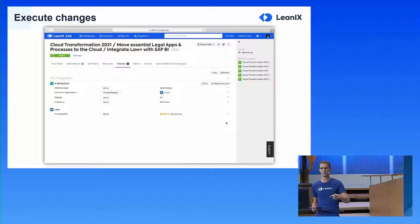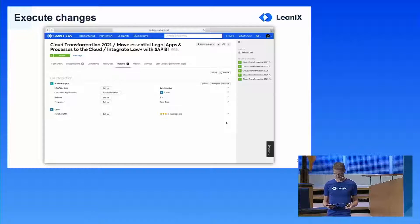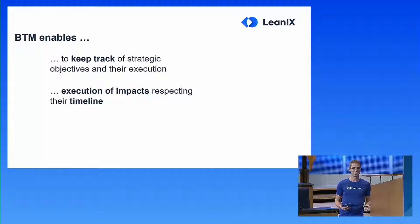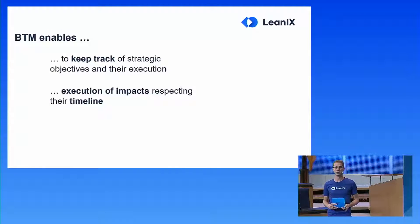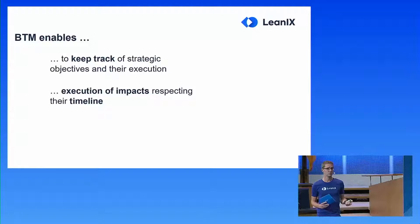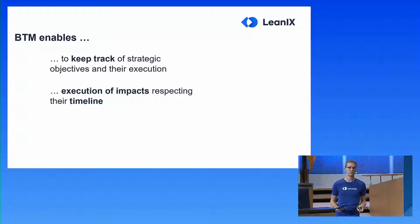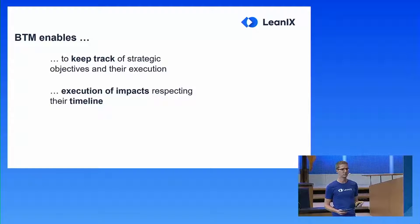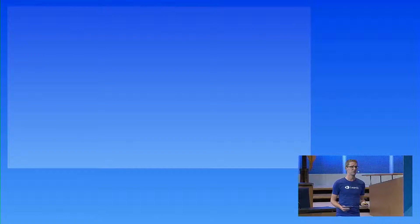These changes are now persisted in your inventory — they are your current state of the architecture. Let's summarize one last time: BTM enables you to keep track of strategic objectives and the execution, and it enables you to execute impacts respecting the timeline of all transformation items. Before I leave the stage, I wanted to share some feedback that we received during the beta phase.